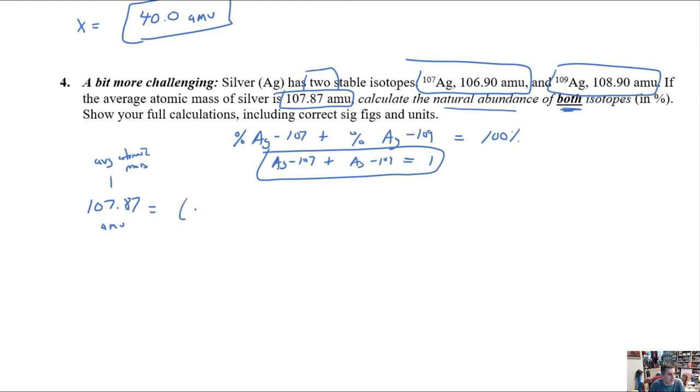And that's going to equal the mass of silver 107, which is 106.90 AMU. And in this case, we don't know what it is. So I'm just going to call this X. And what does this X really mean? Well, it means this value right here, the fraction of silver 107 out of the whole. So then that's going to be added to the mass of the silver 109, which is 108.90 AMU. And in this case, you might want to call this Y. You can say this is the second variable Y, but the problem is we only have one equation here.